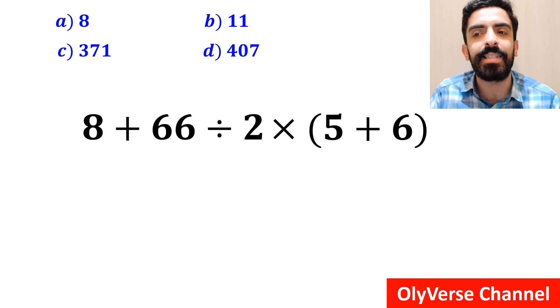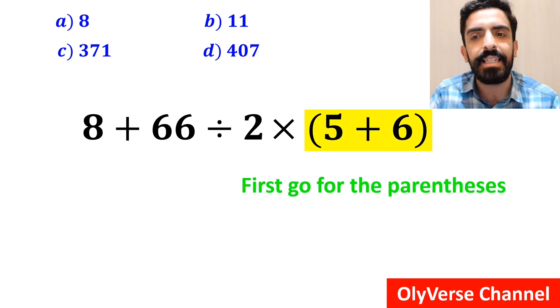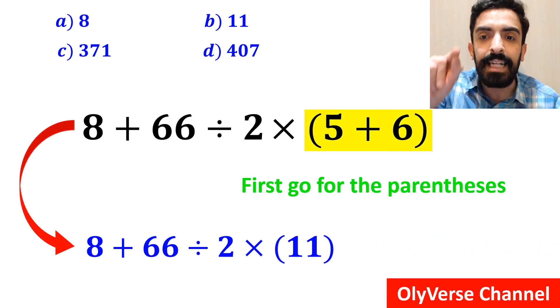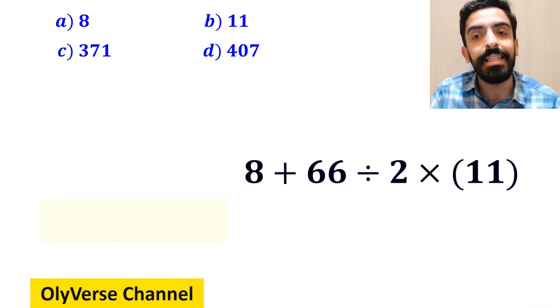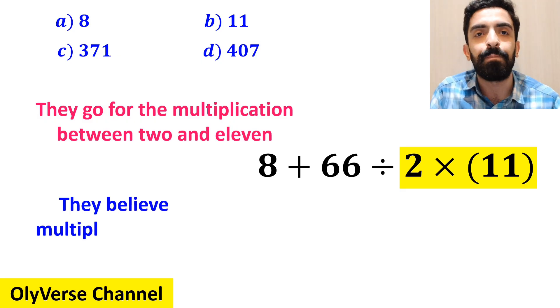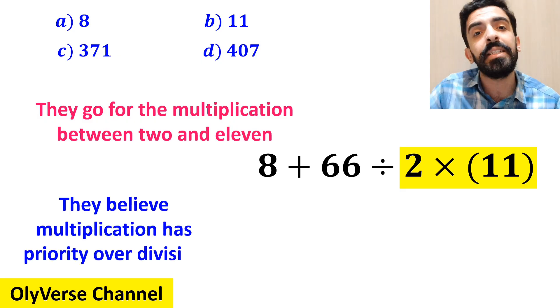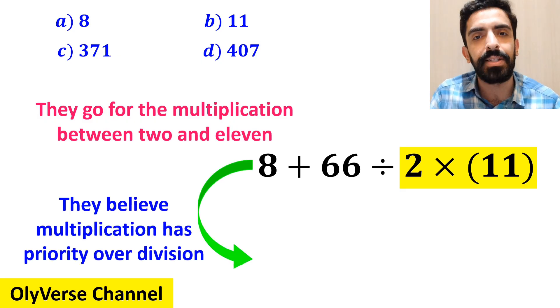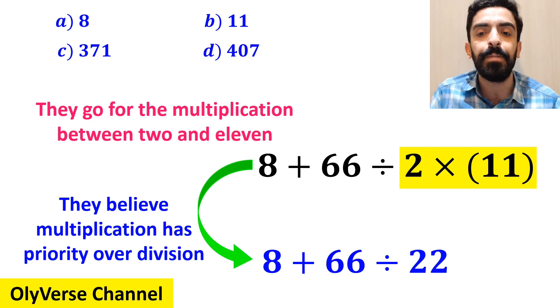some other people when solving this question first go for the parenthesis and write this expression as 8 plus 66 divided by 2 times 11. And the next step they go for the multiplication between 2 and 11 because they believe multiplication has priority over division. So, this expression simplifies to 8 plus 66 divided by 22.